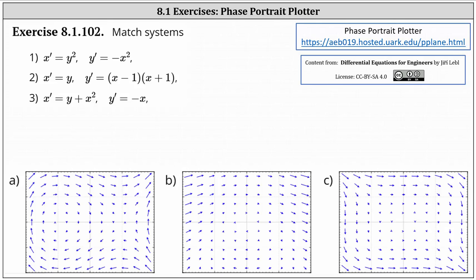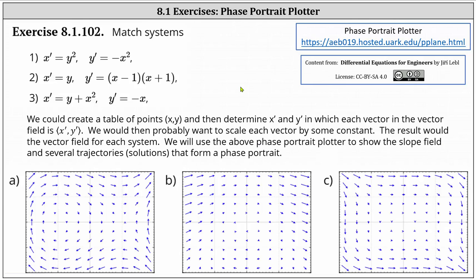In this problem we're asked to match the system of differential equations to the correct slope field below. We could create a table of points x comma y and determine x prime and y prime in which each vector in the vector field has an x component of x prime and a y component of y prime. We would then probably want to scale each vector by some constant. The result would be the slope field for each system.